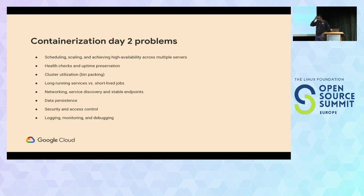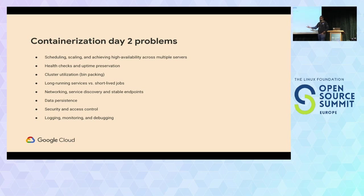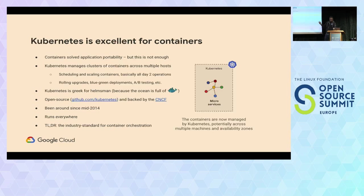Now, when you run containers at scale, you run into day-two problems. Running two, three, or ten containers with Docker Compose is easy. Running thousands of containers in production at scale comes with a bunch of issues. How do you schedule them? How do you distribute them? How do you restart them, monitor them? How do you persist data? How do you do service discovery — making one service find another without hard-coding the IP address? And that's what Kubernetes was created to solve.